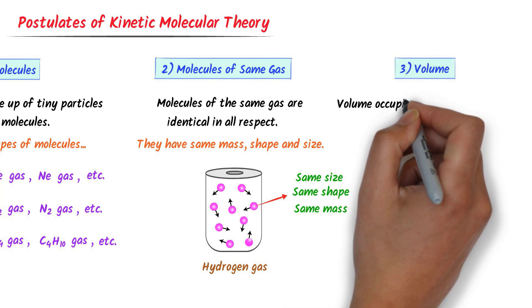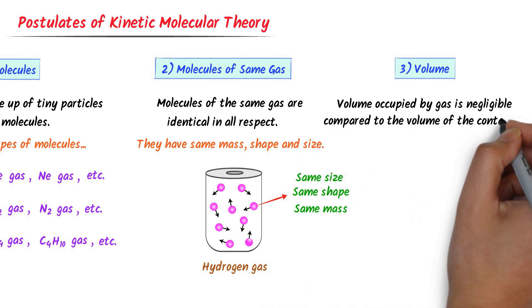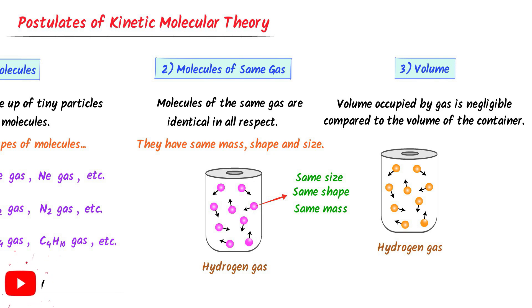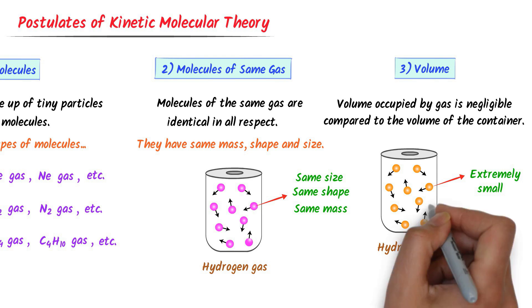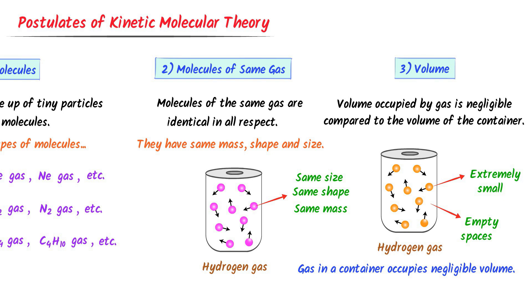The third postulate of the Kinetic Molecular Theory is about volume. It states that the volume actually occupied by a gas molecule is negligible in comparison to the volume of the container. The size of gas particles is very, very small — they occupy very small space in the container, and there are empty spaces between the molecules because they are far away from each other. So we conclude that gases inside a container occupy negligible volume compared to the volume of the container.